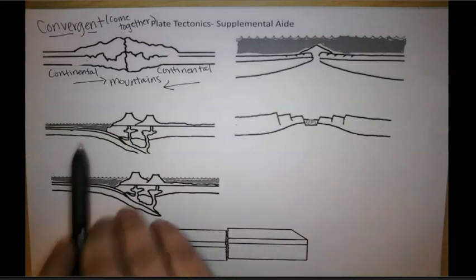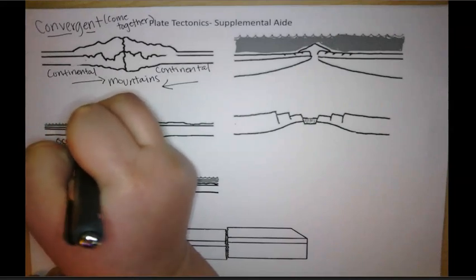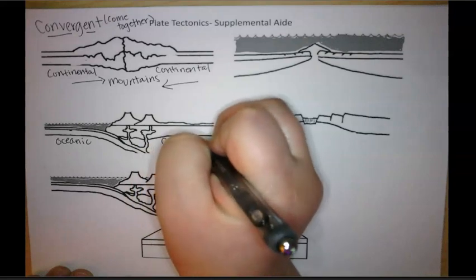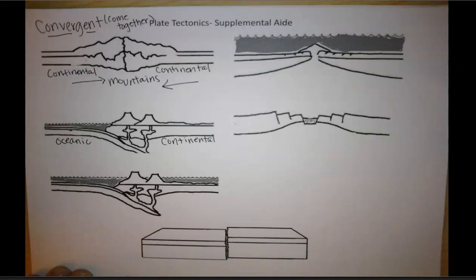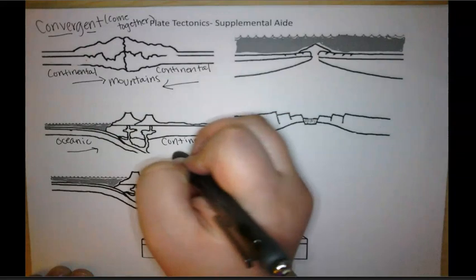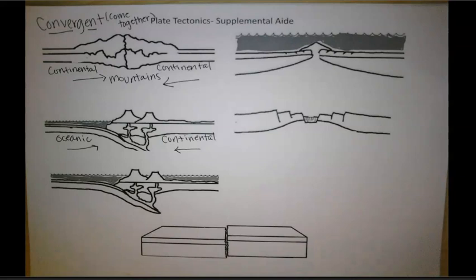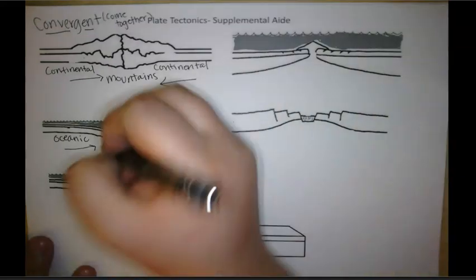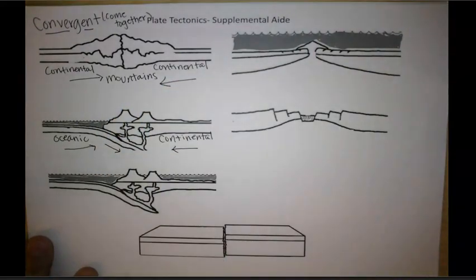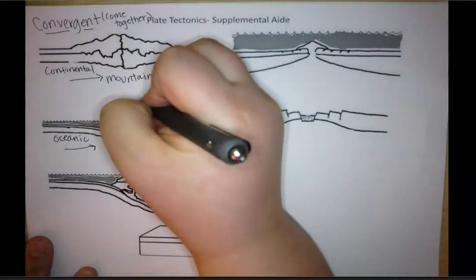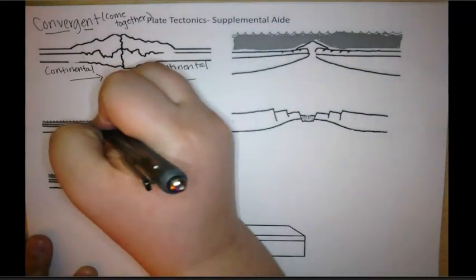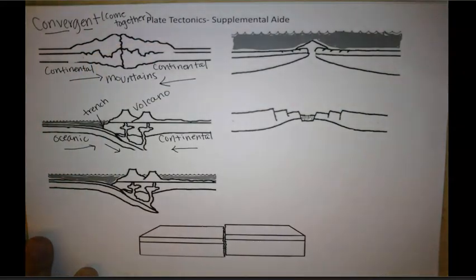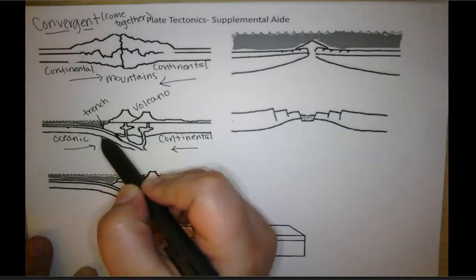Moving on to the next one: oceanic and continental crust. On this supplemental aid, we can tell it's an oceanic plate because it has those little waves to represent the water — this is the crust that's under the ocean. These two plates come together because it is a convergent boundary, but because the oceanic plate is more dense, it's going to subduct or dive down underneath the continental plate. We draw a little arrow going downward. Whenever this happens, the oceanic crust melts and that magma rises to form volcanoes. Also, because of this subduction zone, we get deep ocean trenches — the deepest places on Earth.